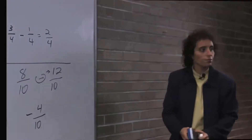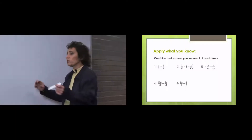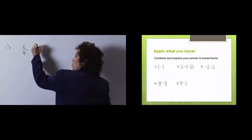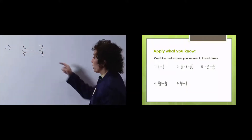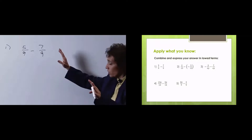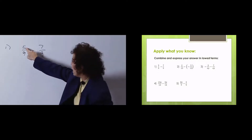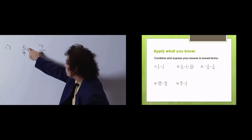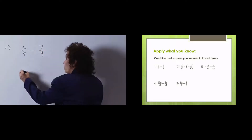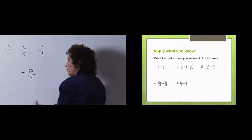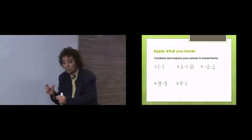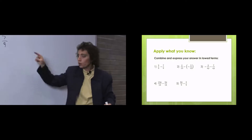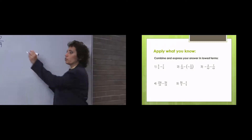So it's that simple. Let's take a look at these examples. Number 1: 5 ninths minus 7 ninths. Again, check your denominator — if they're the same, it's an easy thing. I have 5, I owe 7. Think of this as being a numerator. I have 5, I owe you 7, so I owe you 2 — keep the denominator — I owe you 2 ninths.